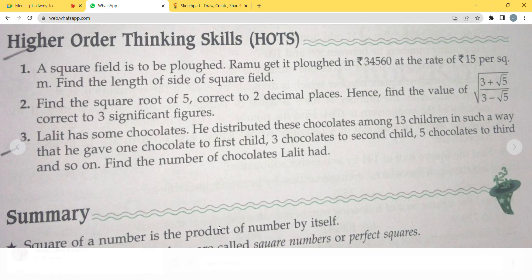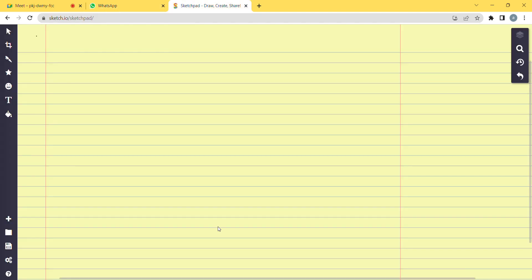'Lalith has some chocolates. He distributed these among 13 children such that he gave 1 chocolate to the 1st child, 3 chocolates to the 2nd child, 5 chocolates to the 3rd child, and so on. Find the number of chocolates Lalith had.' So the chocolates follow the pattern of odd numbers: 1, 3, 5, 7... distributed to 13 children. This will form an AP series.